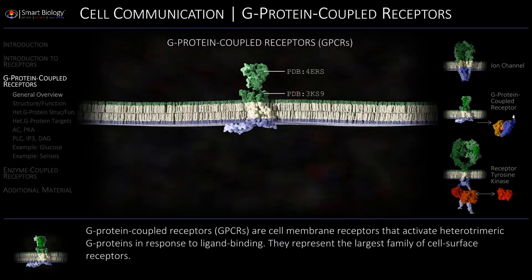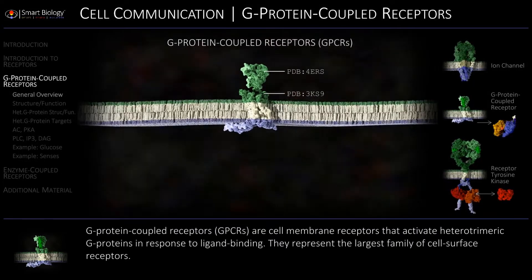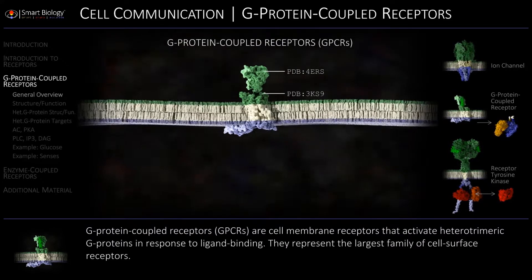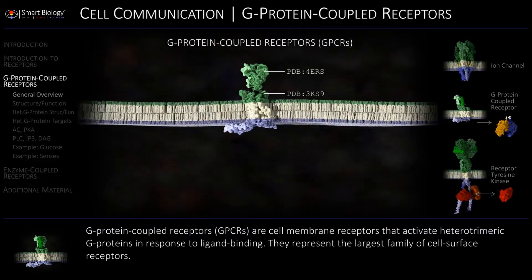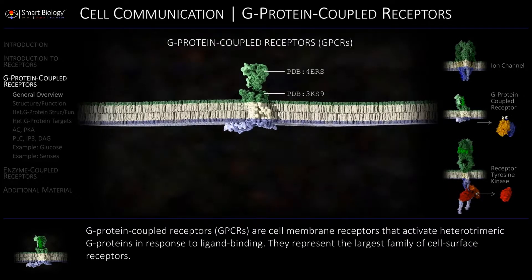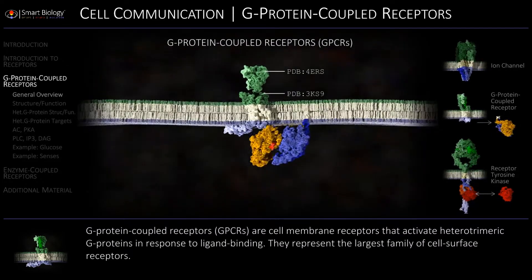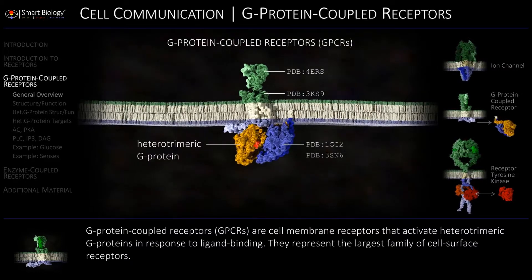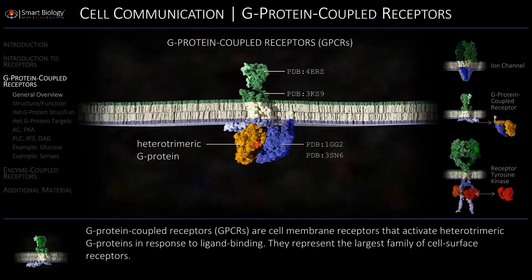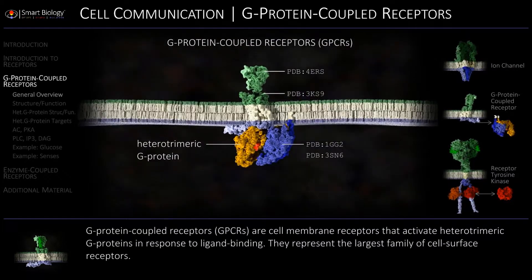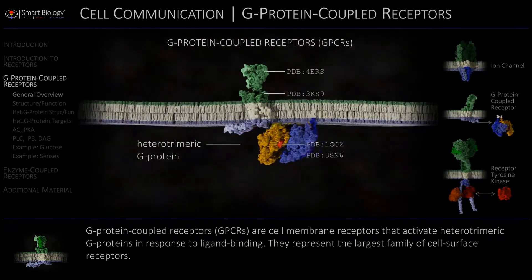G-protein-coupled receptors, or GPCRs, are cell membrane receptors that activate heterotrimeric G-proteins in response to ligand binding.